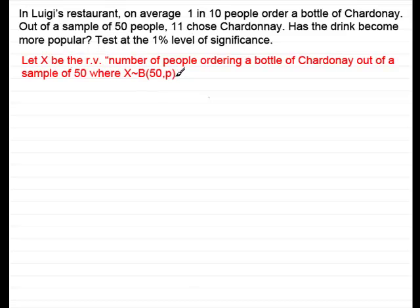Now, if we assume that nothing has changed, that the proportion still remains at one in ten, then we have the null hypothesis, which is given by Ho, is that p is one in ten. Now, if one in ten people do choose Chardonnay, then out of fifty people, what we could expect is one tenth of fifty, which would be five people choosing Chardonnay.